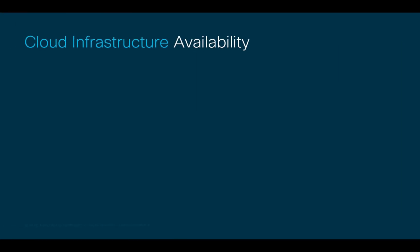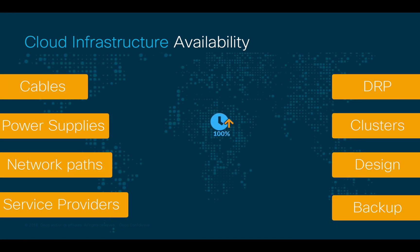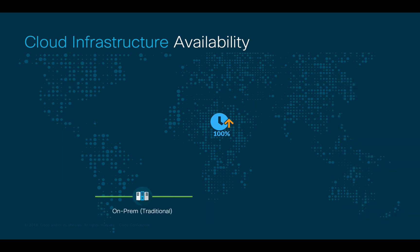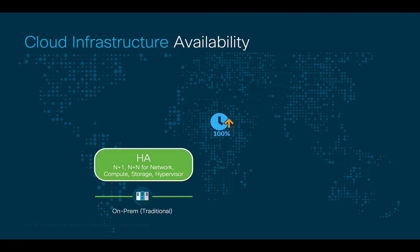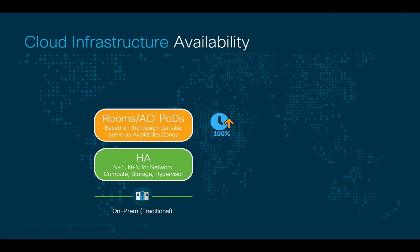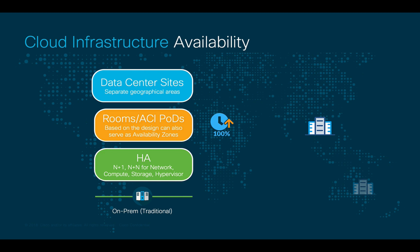First, let's talk about availability. Today, you have to take into consideration multiple things to keep the business operational 24 by 7 when running on-premises. We usually include high availability and redundancy at the element level for switches, servers, storage, hypervisors, and so on. Then, we may provide different rooms, ACI pods, or even data centers to increase availability within a geographical area. And finally, we have to consider the risk of fires, hurricanes, earthquakes, and many others. Therefore, including multiple data center sites across separate geographical areas has been a common practice.